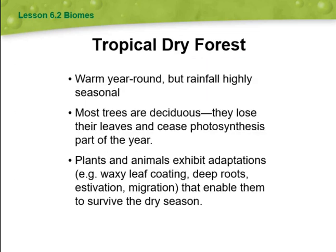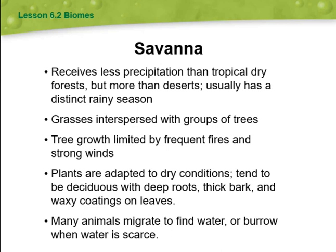The tropical dry forest is warm year-round, but rainfall is highly seasonal. Most trees are deciduous — they lose their leaves and cease photosynthesis part of the year. Plants and animals exhibit adaptations such as wax leaf coatings, deep roots, and migration that enable them to survive the dry season.